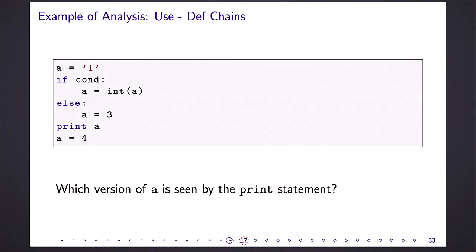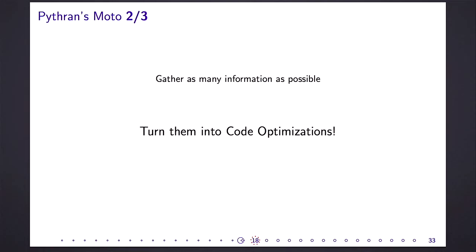We have use-def chains. It's a classic compiler analysis. It's dependency analysis. It tries to find in the flow, the control flow, where a definition of a variable, which means the result of a computation, will be used. So we can sometimes eliminate code that is useless, or reorganize code, changing the order of the statements, and preserving the semantic of your program. So what do we do with all these analyses? And we have some others, but I won't have time to go into detail. We turn them into code optimizations.